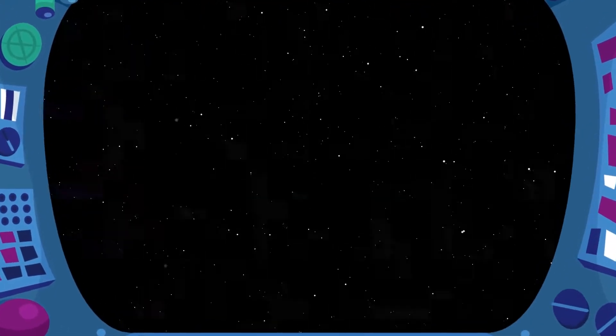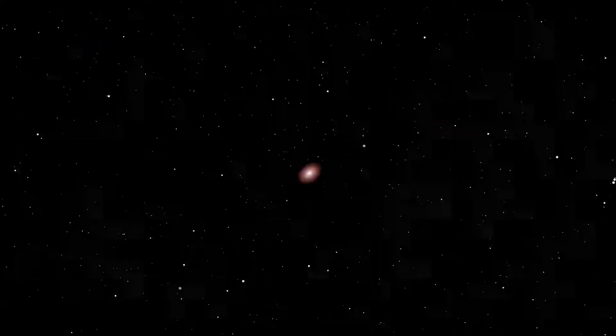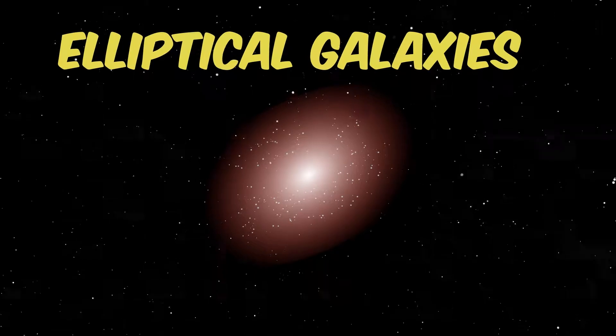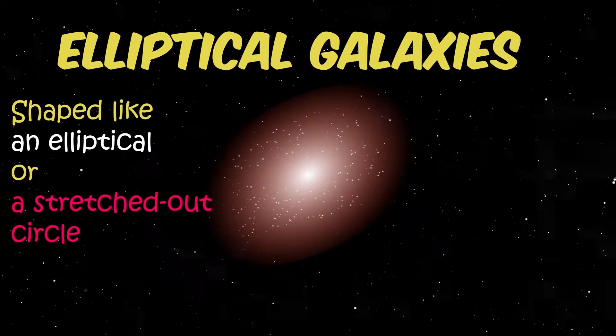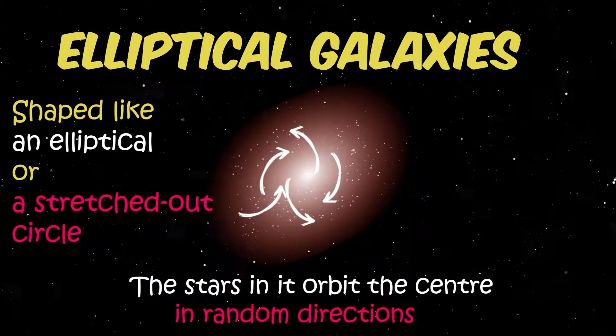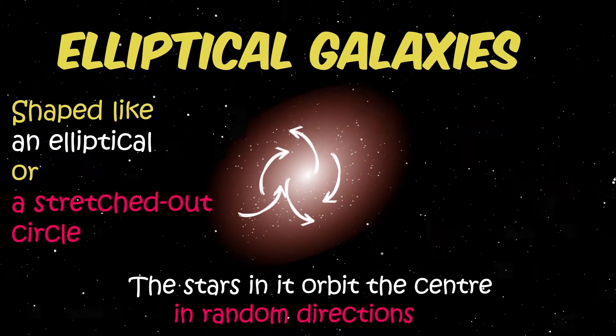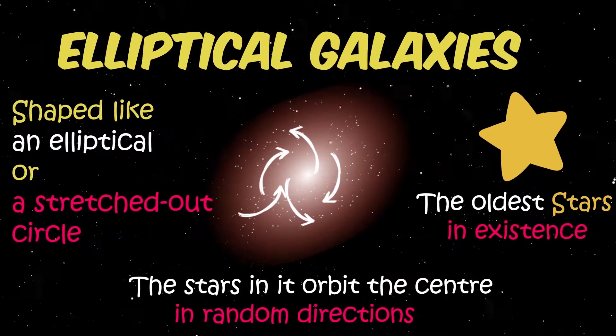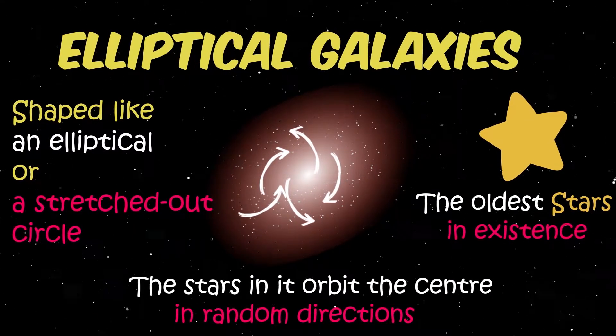and you will see some great examples of the different types of galaxies. Elliptical galaxies! It's shaped like an elliptical or stretched out circle. The stars in it orbit the centre in random directions. Among them are actually some of the oldest stars in existence.